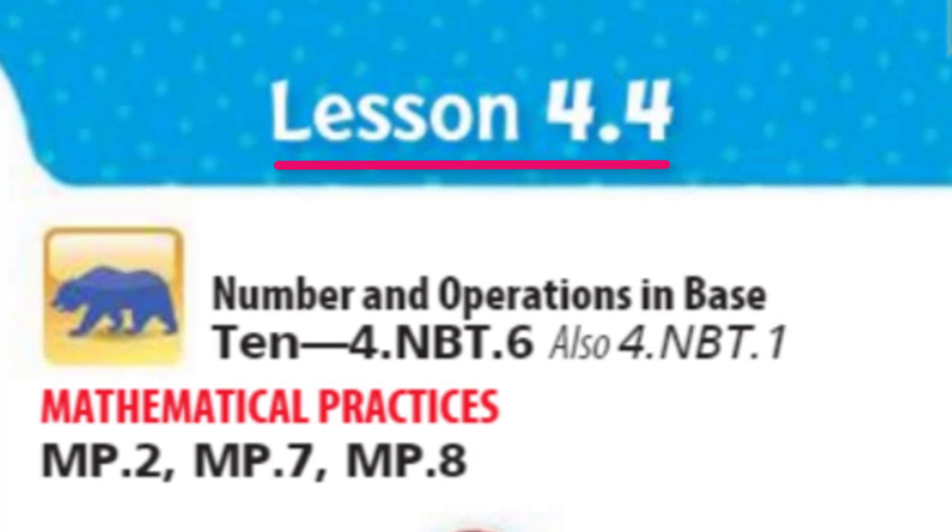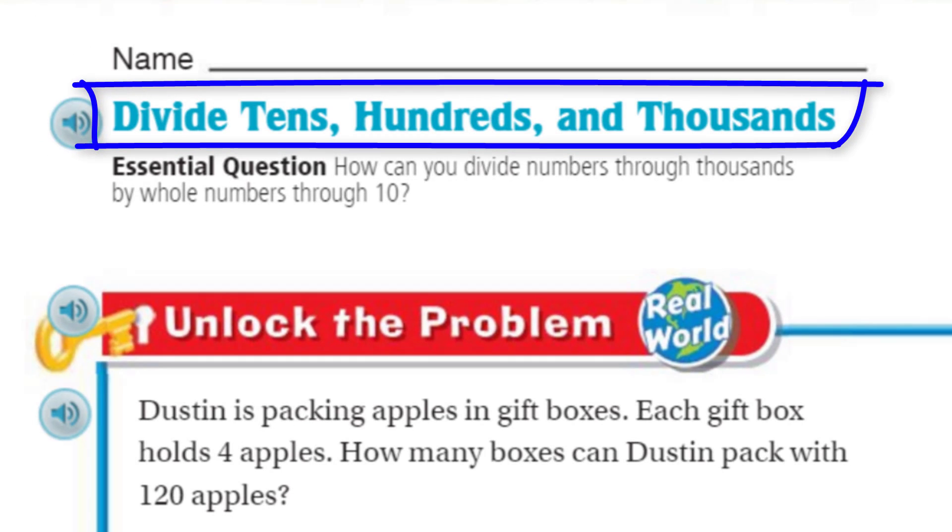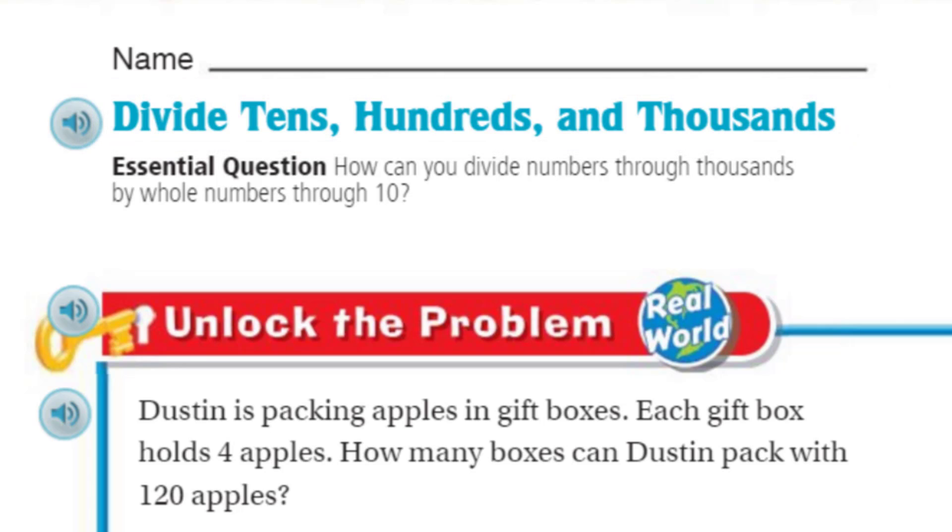This is lesson 4.4. Look at our title. Divide tens, hundreds, and thousands. I love it. Tell me that isn't what you came here for, my friends. It is. And we also have a purpose. That's right. I say purpose, not porpoise. Porpoise, we know, is a type of dolphin. Purpose is objective. Why are we doing this lesson? It says, how can you divide numbers through thousands by whole numbers through ten? That just sounds like chocolate melting in my hands.